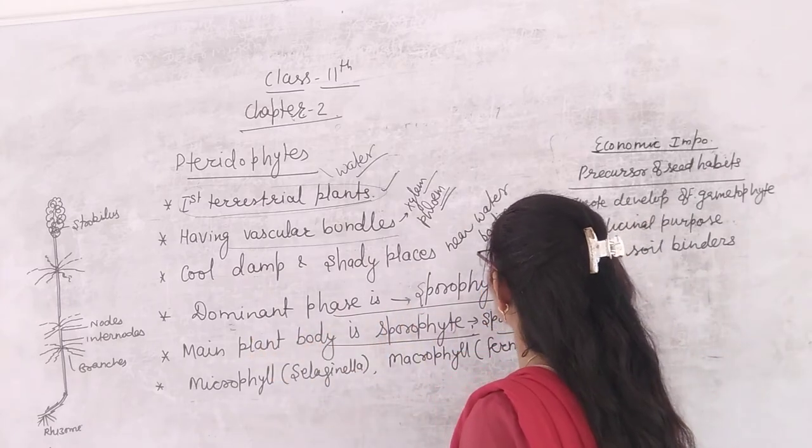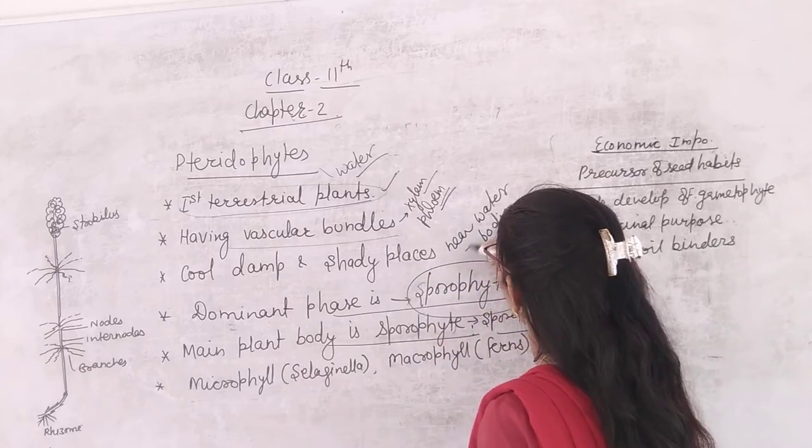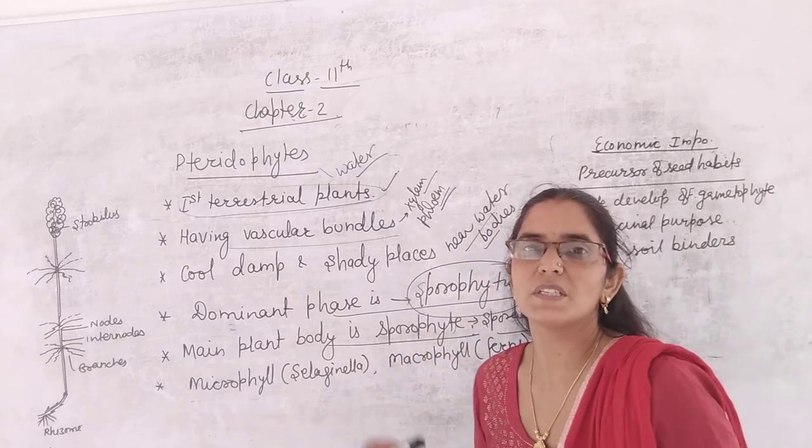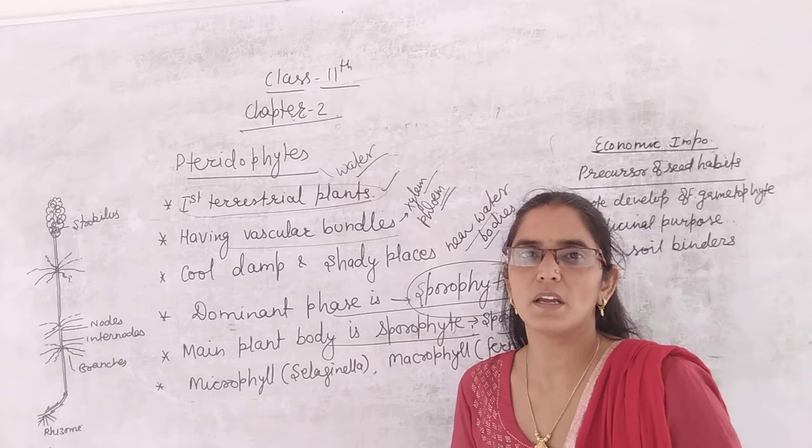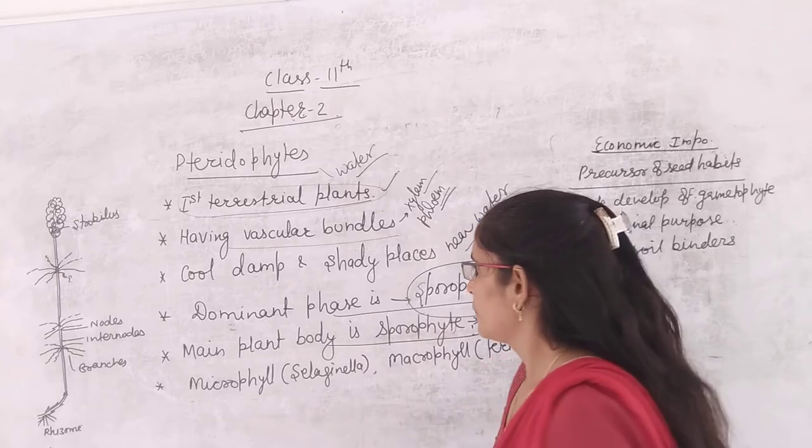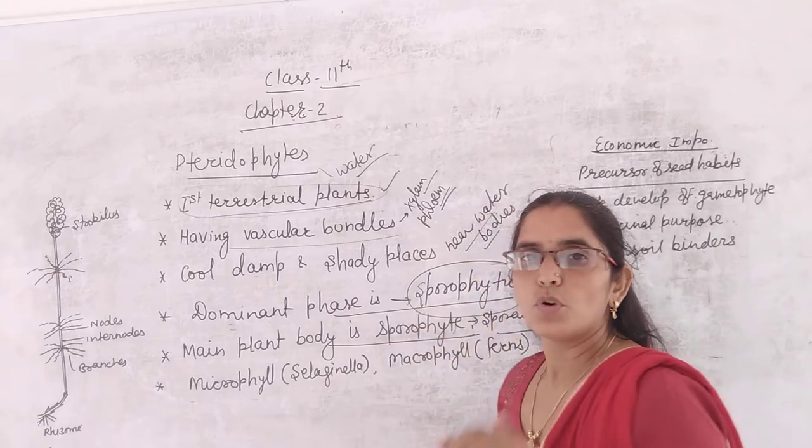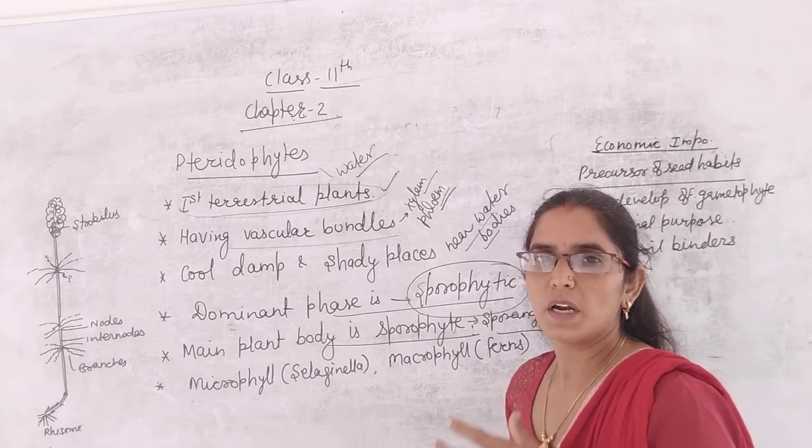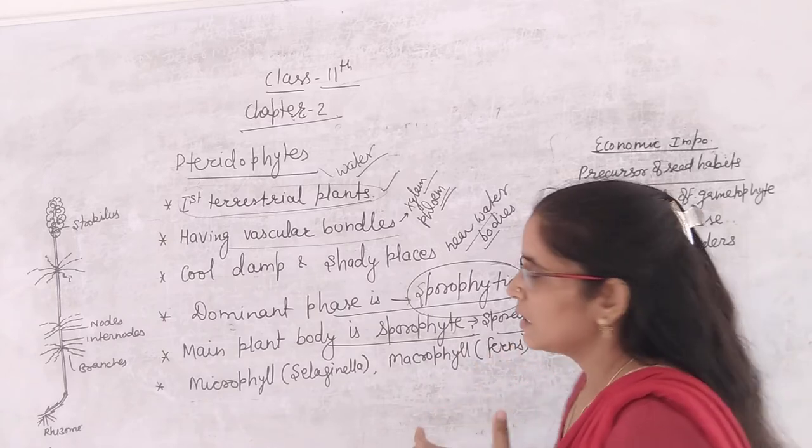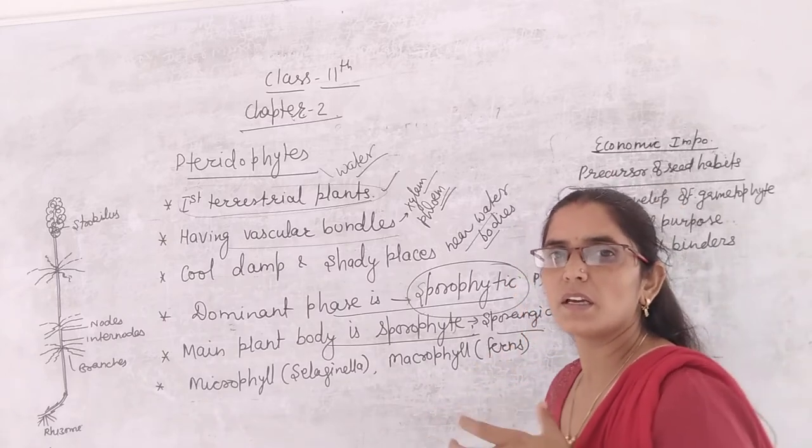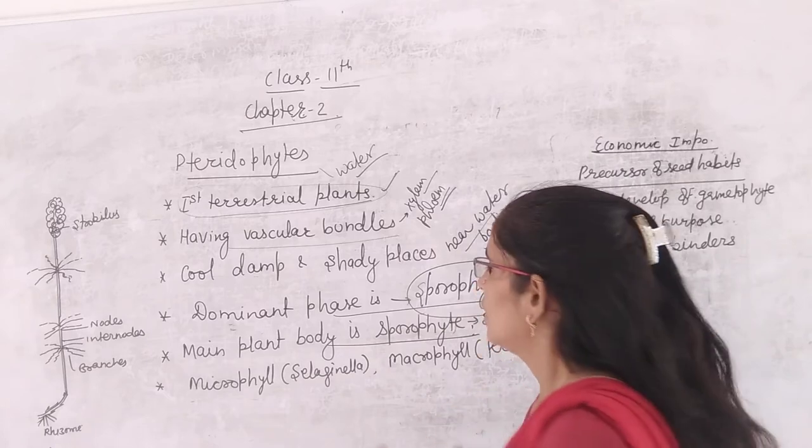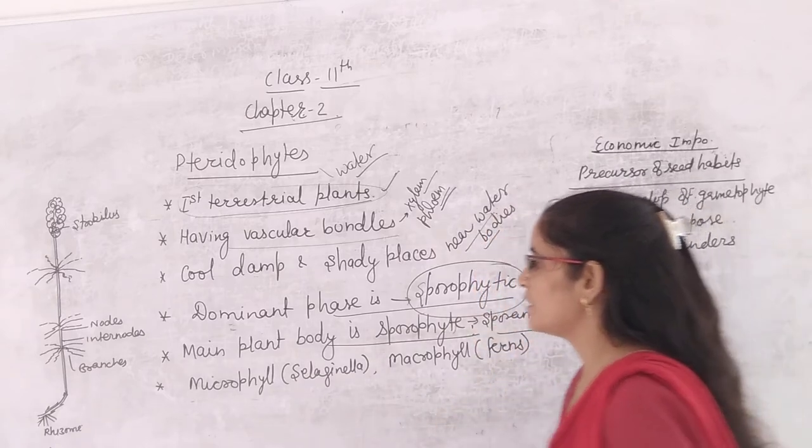Dominant phase in life is sporophytic phase. Near water bodies mainly they complete their sexual life cycle. When they have to complete it, they also require water. Dominant phase is sporophytic. Sporophytic plant body is dominant phase.